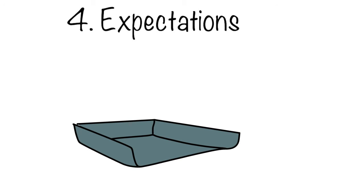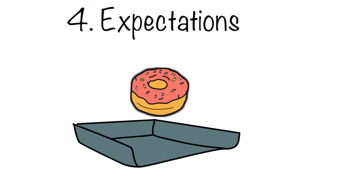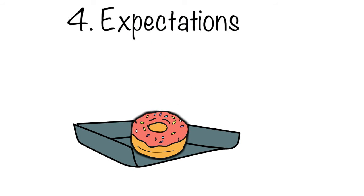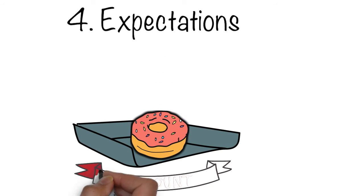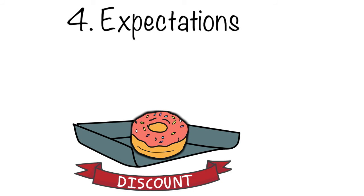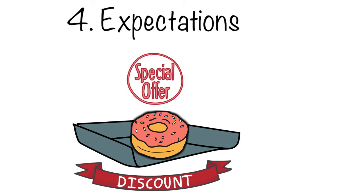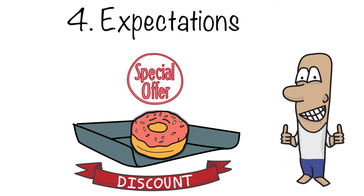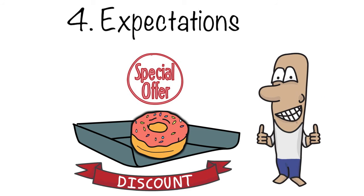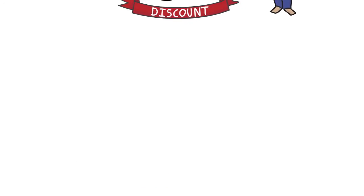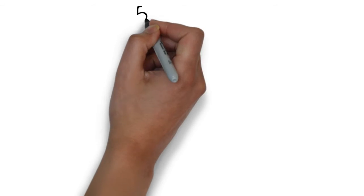Number four in terms of determinants is expectations — how you think the price will change in the future. For example, with our donut, it might come to the end of the day where the shop starts to sell donuts at a reduced price rather than let them go stale. If you expect the price to decrease in the future, you will reduce your demand now so that you can demand it in the future at the lower price.